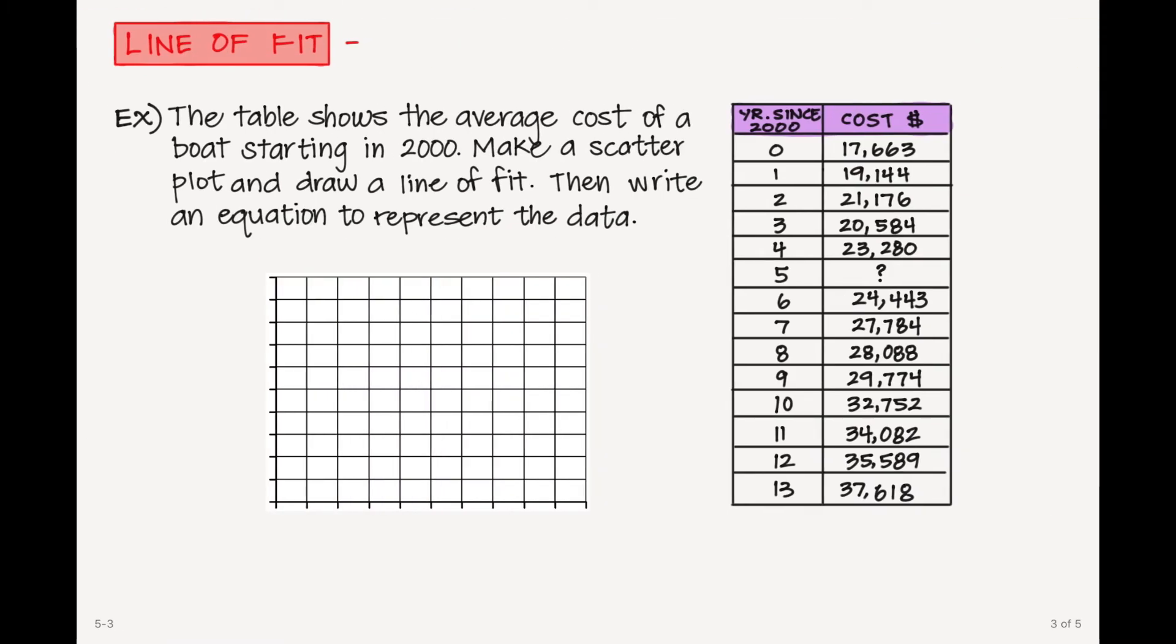Now we're going to talk about a line of fit. This is where we see that our data has some sort of trend or correlation, and so we would draw a line that is going to fit our data. This line is going to be close to our scatter points as closely as we can get it.